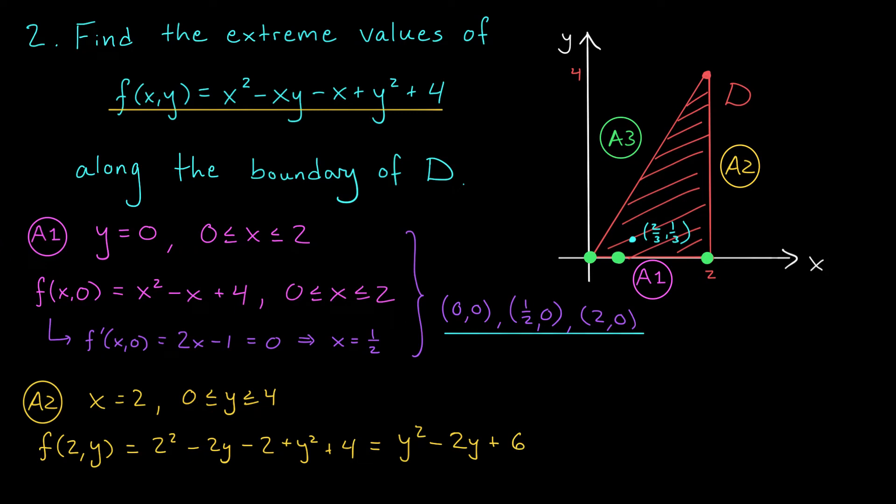And, oh no, once again, I can't tell just by looking at this quadratic where it's going to attain its global max and global min for y between 0 and 4. So, I'm going to do the same trick as above. I'm going to look for the critical points in this interval. I'm going to throw in the endpoints, and we'll test them all at the end of the problem.